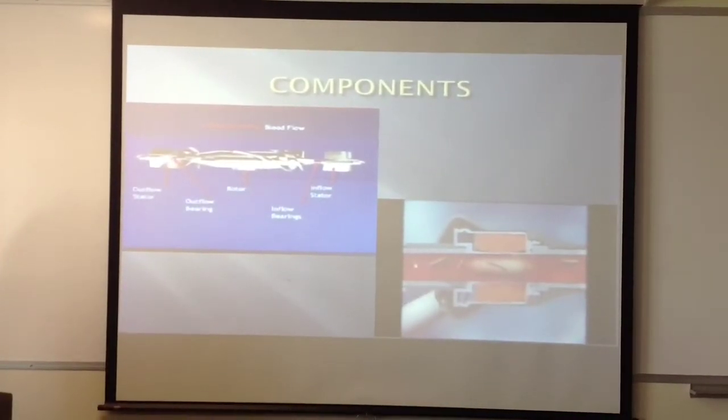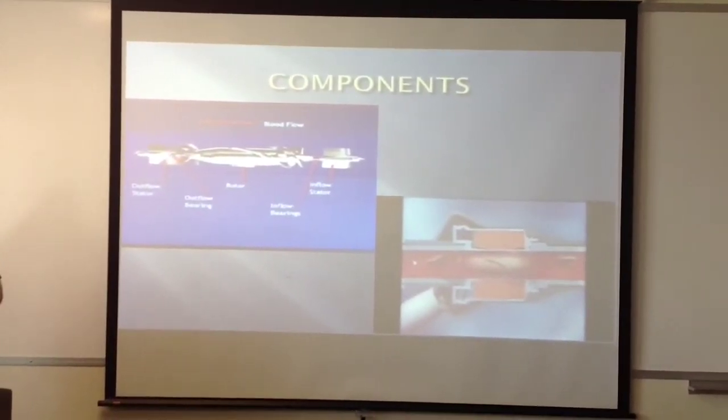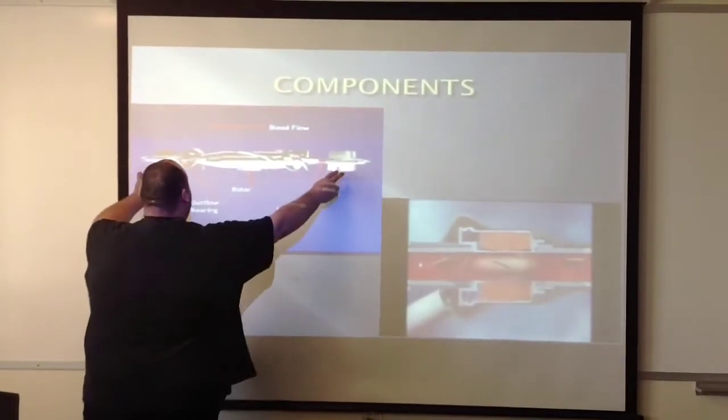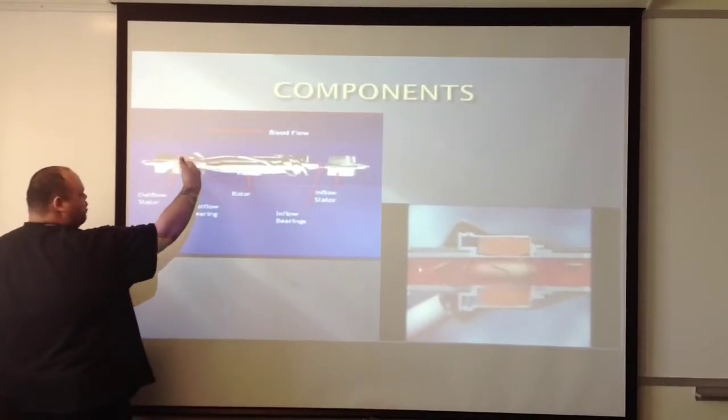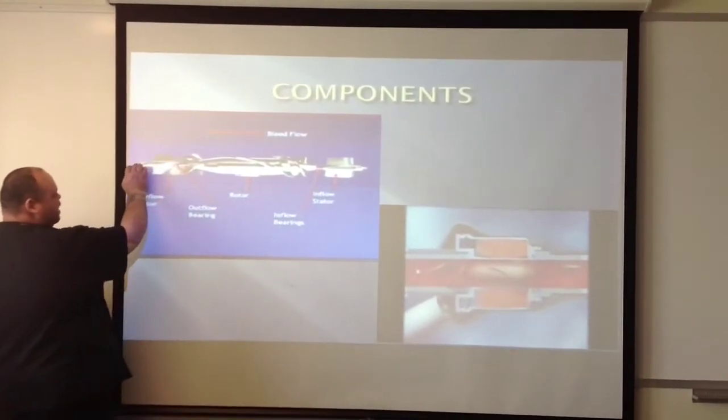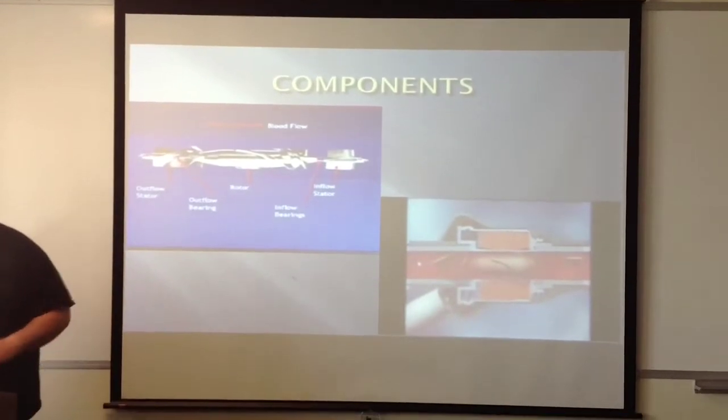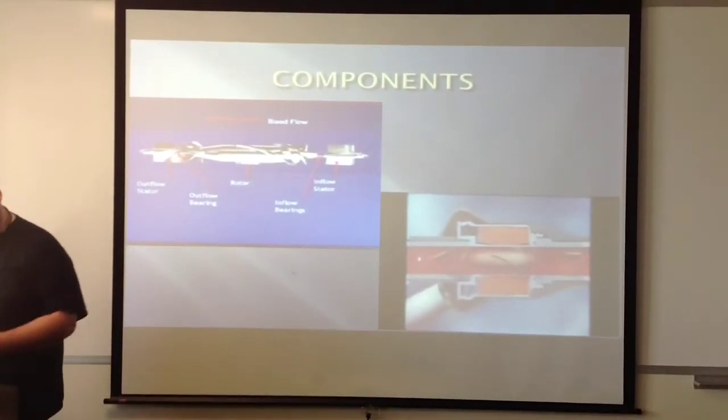You have the inflow bearings and the inflow stator. The use of the stator is to straighten up the blood as it's spinning and being rotated around. This would set it in a straight stream so it can go back into the aorta and back into the blood flow normally.